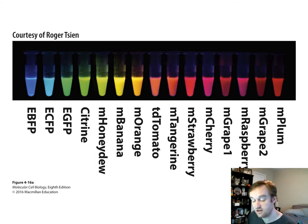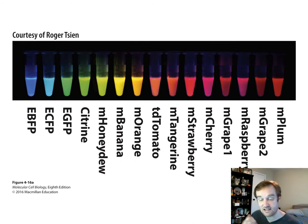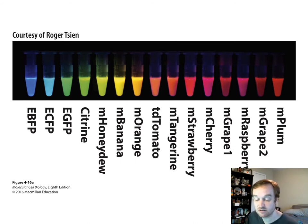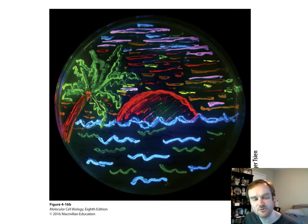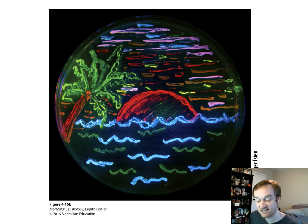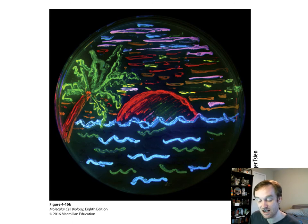There are many different fluorescent labels available — over a dozen different colors — that can label multiple cell components and be overlaid to get a complete image of what is going on in the cell. As a creative example, an artist used multiple bacterial colonies expressing different fluorescent proteins, where each color is a different bacterium expressing one of these fluorescent proteins.